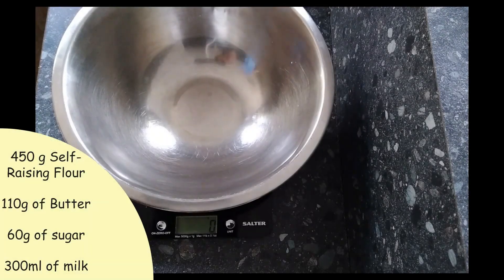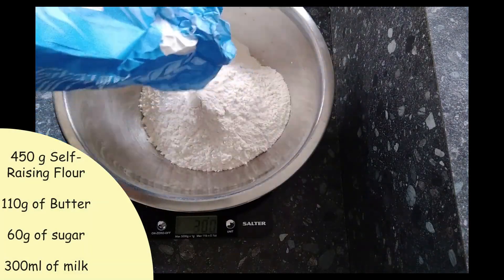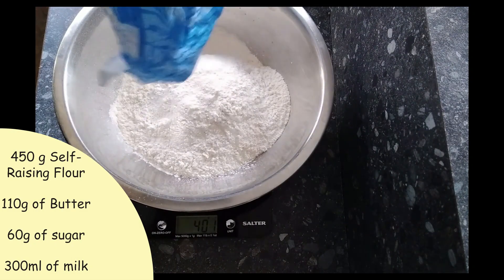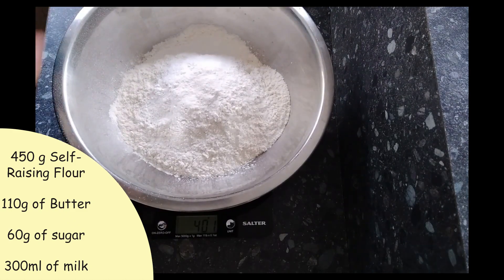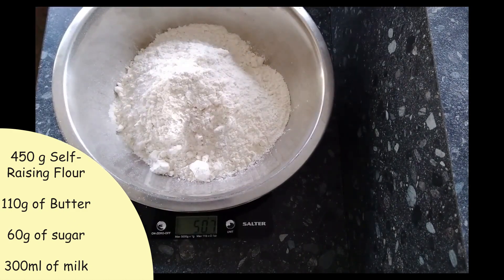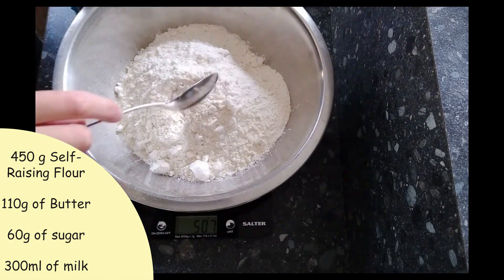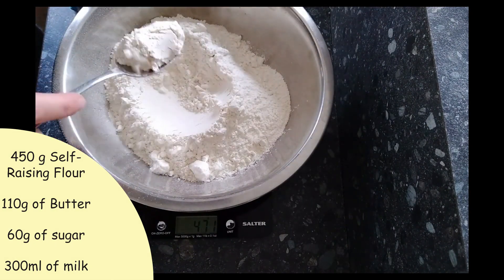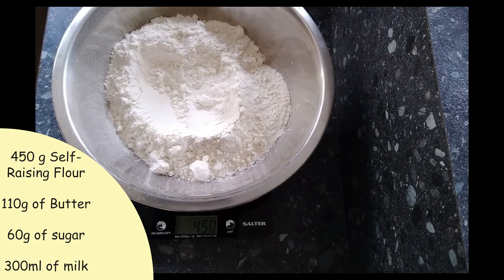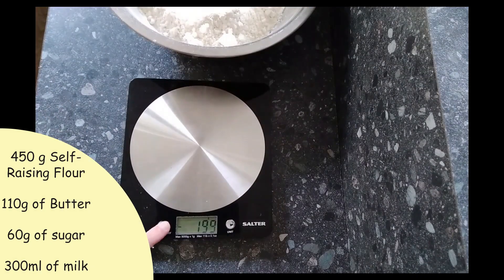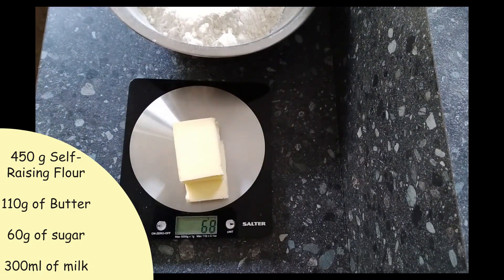So firstly you're going to weigh your 450 grams of self-raising flour into the bowl, and if you've put a bit too much in then you can just scoop some back out. Now make sure you reset to zero and measure out 110 grams of butter.